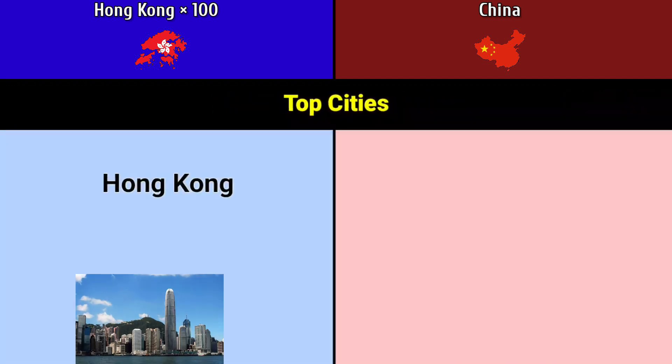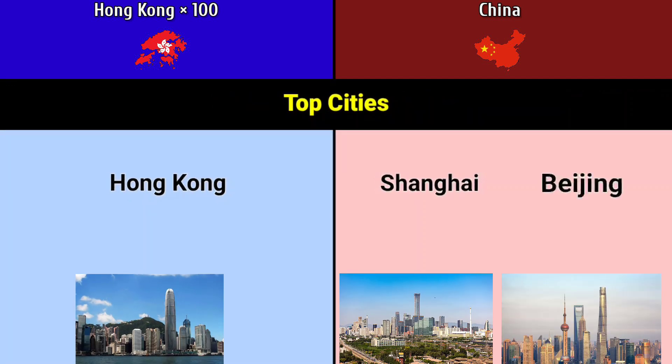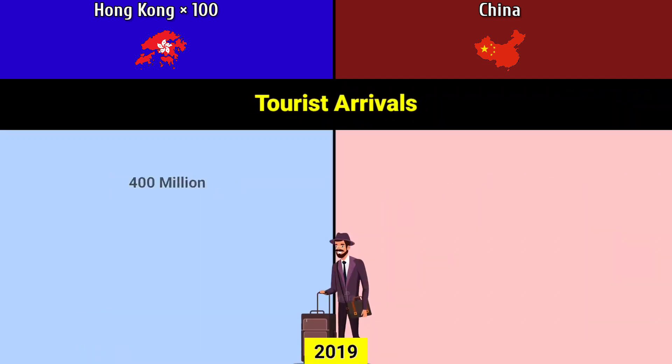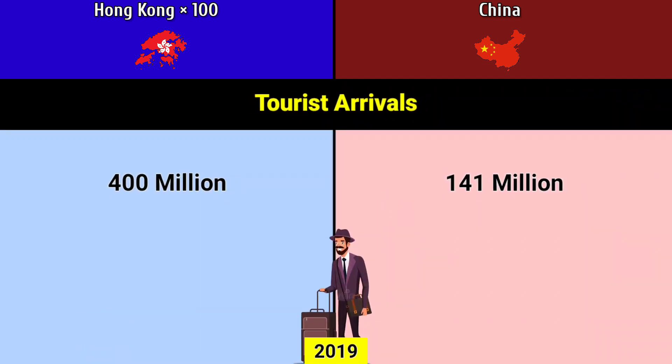Top cities: Hong Kong; Shanghai and Beijing. Tourist arrivals per year: Hong Kong 400 million, China 141 million.